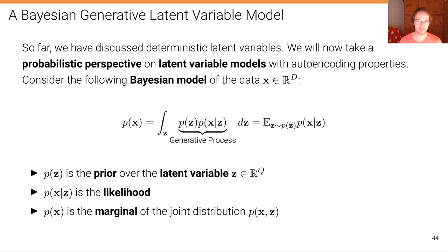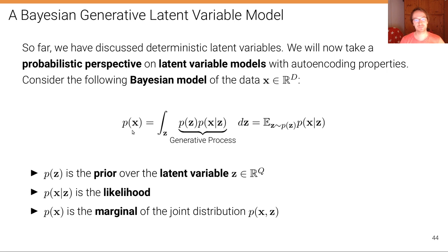Consider again the following Bayesian model of the data X. We have a generative process with a prior on the latent variables and a likelihood P of X given C. Integrating that over C yields the marginal or data likelihood P of X, which we want to maximize. This expression is simply the expectation of the conditional likelihood X given C with respect to C drawn from the prior distribution.